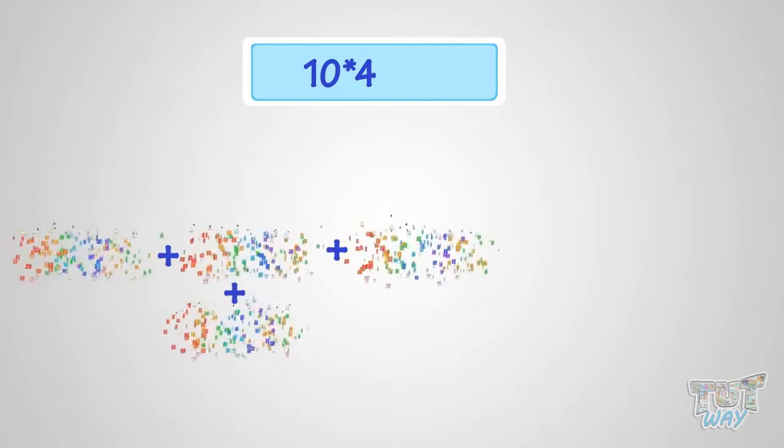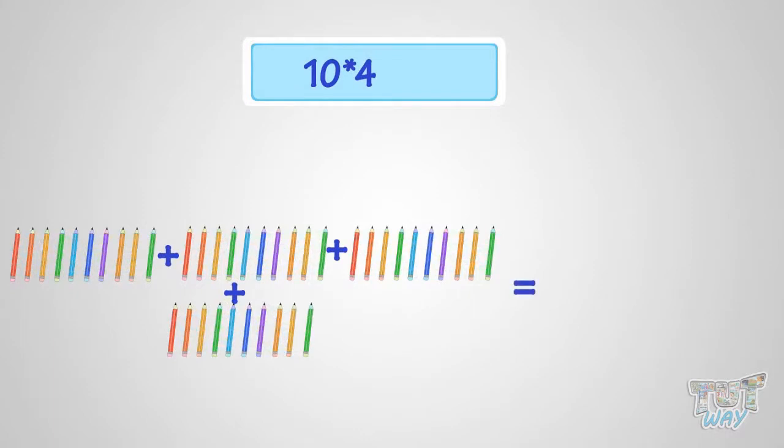What is 10 multiplied with 4? It is same as four sets of 10 pencils. So, it is 40 pencils. That is, 10 multiplied by 4 is 40.